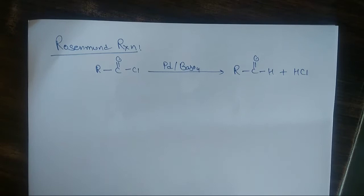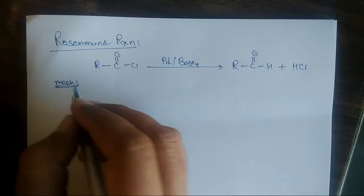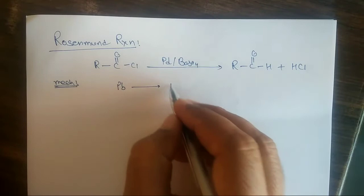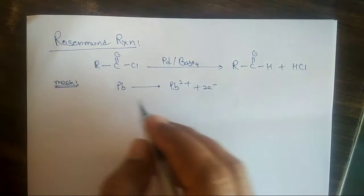So what exactly is the mechanism of this reaction? Let us study the mechanism. Platinum is oxidized to give Platinum(II) — that is, Platinum undergoes oxidation to give Pt²⁺ plus two electrons.